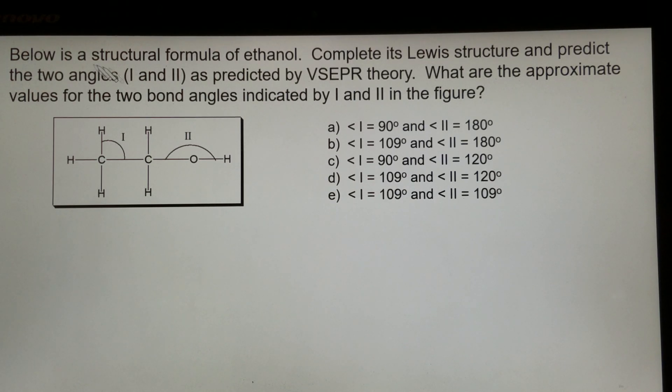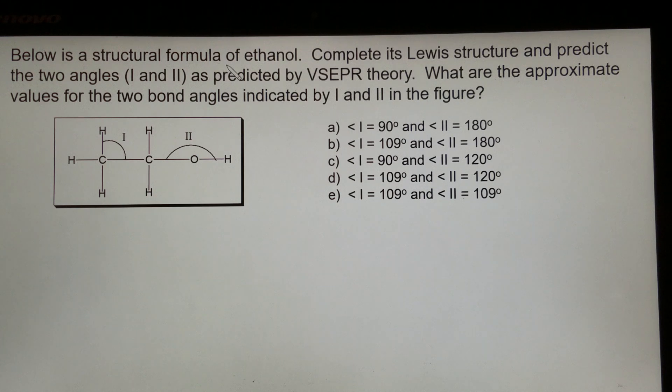Below is a structural formula for ethanol. Complete its Lewis structure and predict the two angles, one and two. One is this angle, two is this one.